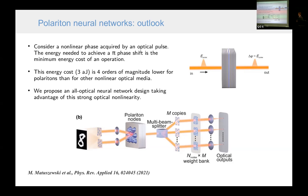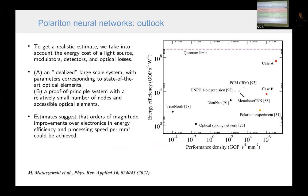And using this, we proposed a design of a neural network, a simple neural network, one layer, with one hidden layer, which contains polariton nodes and additional setup, which is performing basically a linear operation of multiplication of a vector by a matrix. And this is actually a quite important result for this talk, because in this figure, I show the potential energy efficiency and performance density for different systems. And to get a realistic estimate of efficiency, we took into account also the cost, energy cost, the light source, modulators, detectors and optical losses.